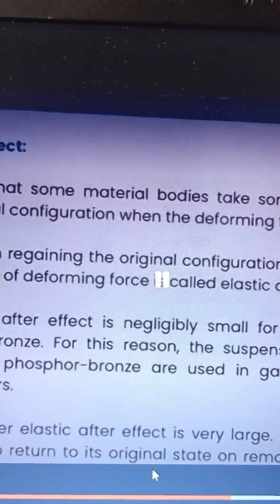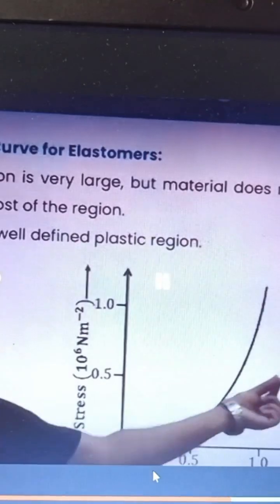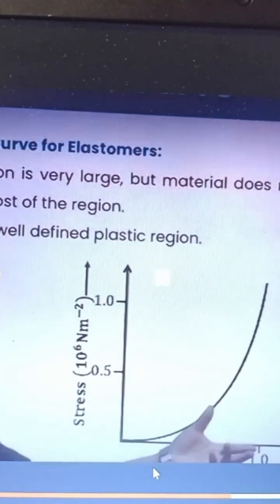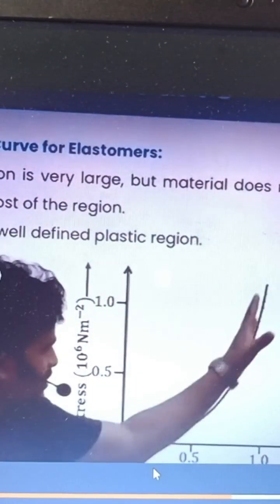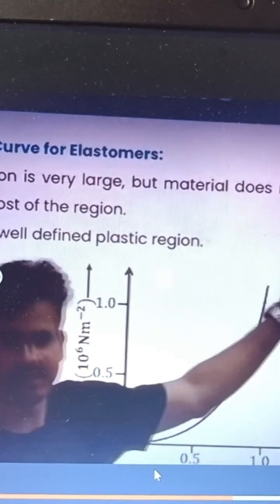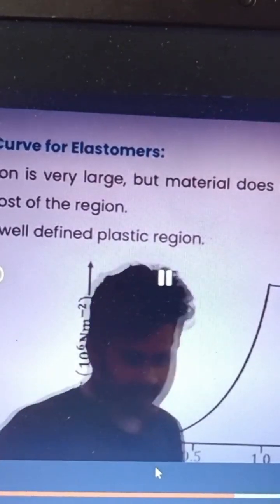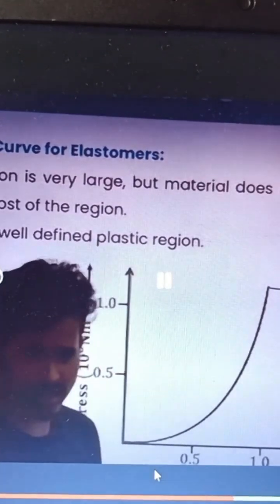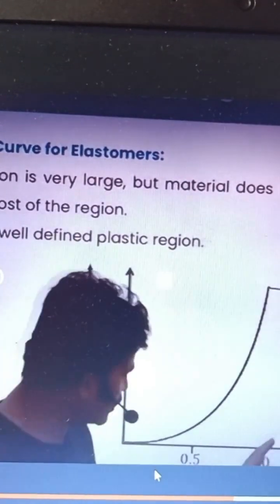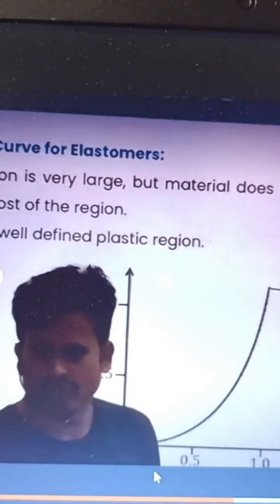Student: Is there any defined plastic region? No, sir. Up to this limit it is elastic. Because it is not straight like this type of graph — the strain is not that sharp. So the Poisson's ratio would be adjusted.